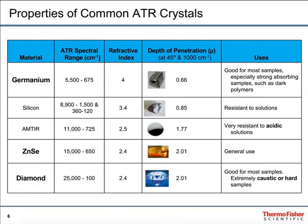The IR beam must pass through the crystal, and the crystal must be in contact with the sample. There are three parameters which define which crystals are used in a given circumstance. One is the spectral range — over what range does the crystal have a clear usable window? The next is the depth of penetration, which is how far into the sample the IR beam penetrates. And finally, there is the robustness — how the crystal material resists environmental wear. The most popular is diamond: it has a wide spectral range, a depth of penetration of about two microns, and it is the most robust of the materials.